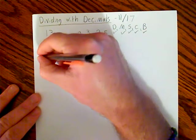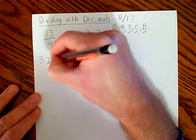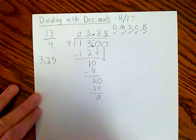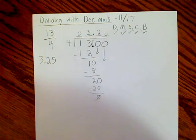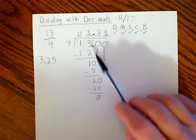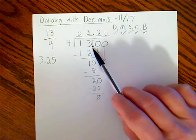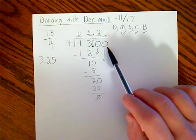And that is our answer: 3.25, or 3 and 25 hundredths, is our answer for 13 divided by 4. Again, what we did differently this time is we added a decimal point and we added on a couple zeros to help us divide that uneven number.